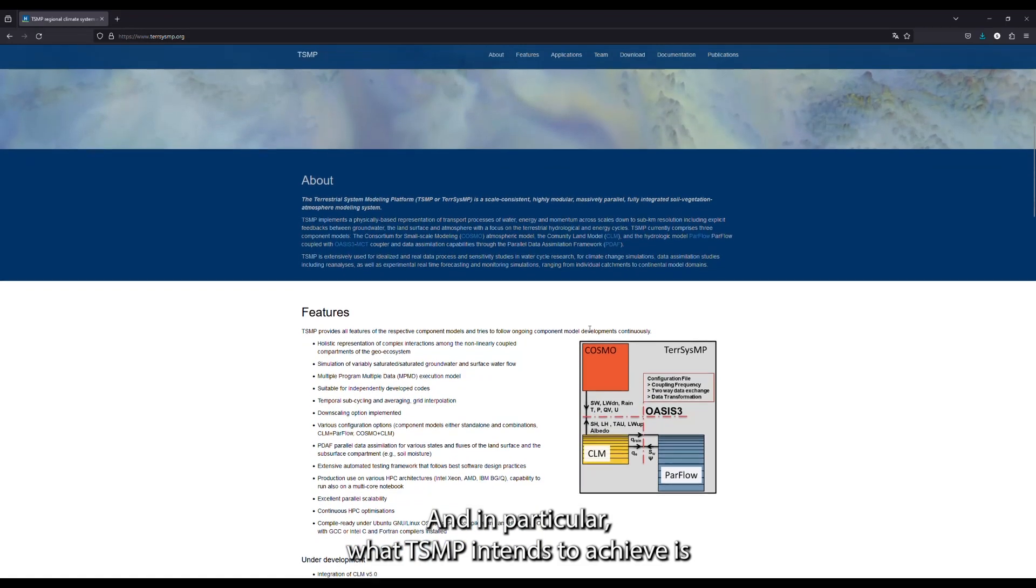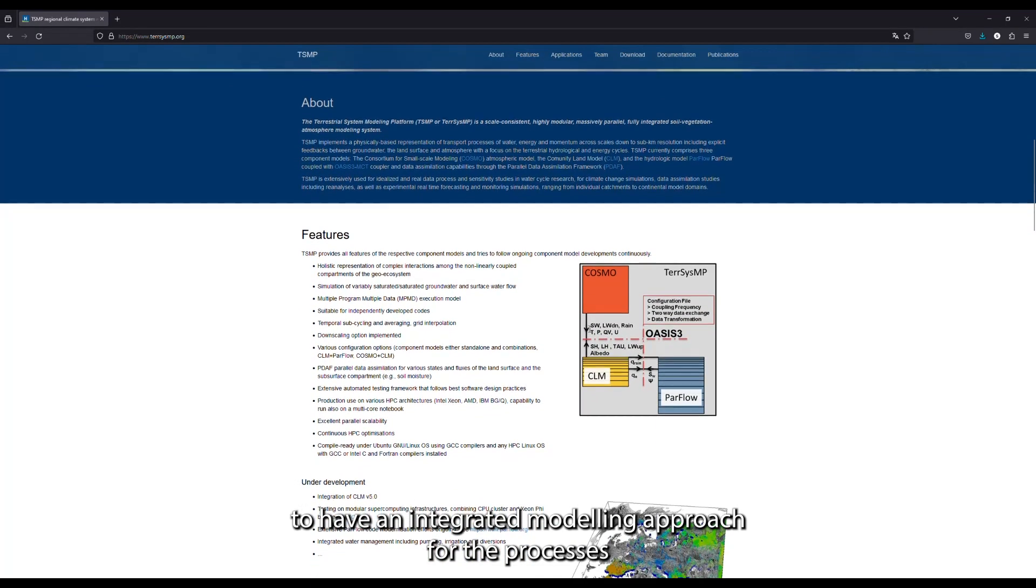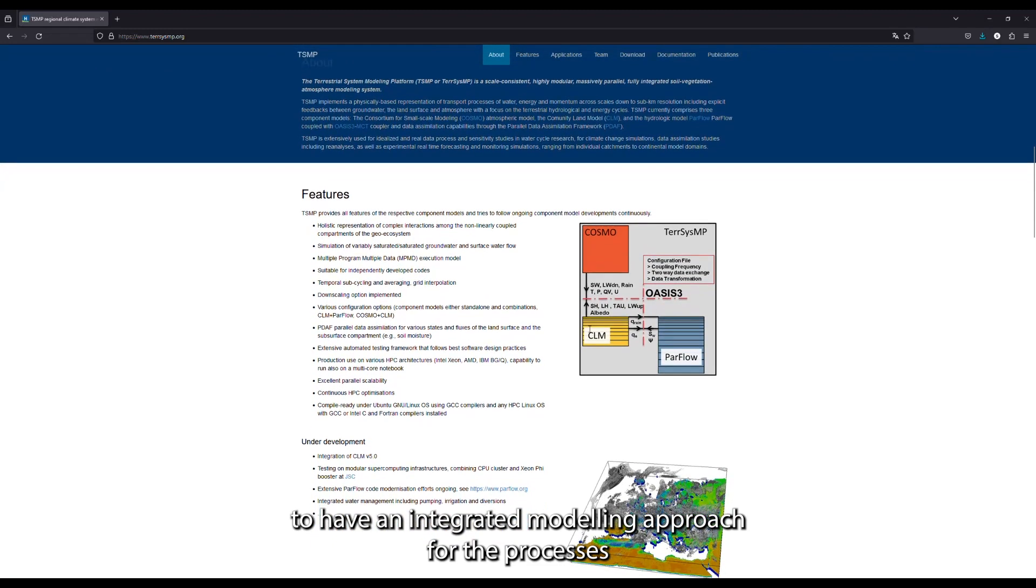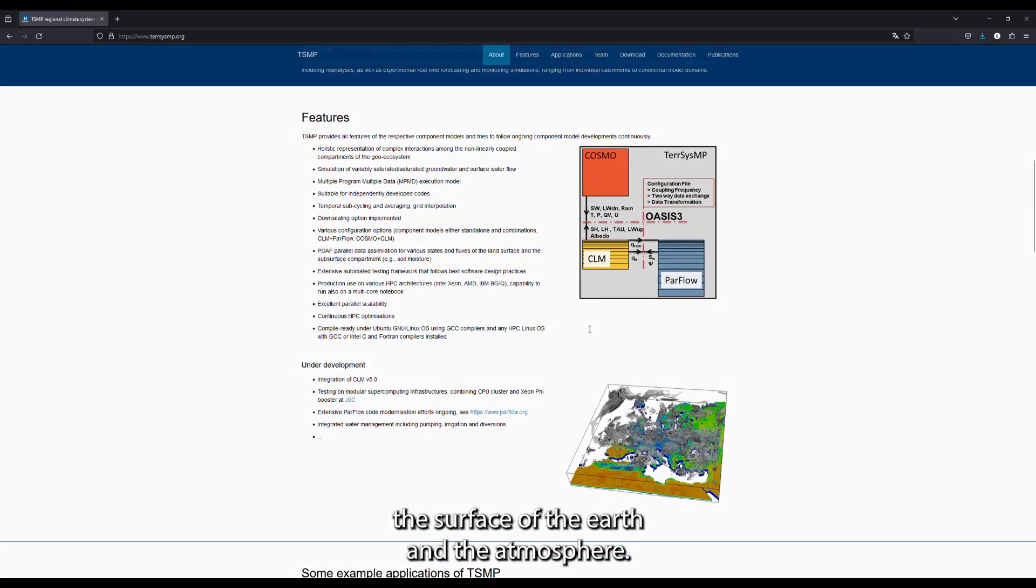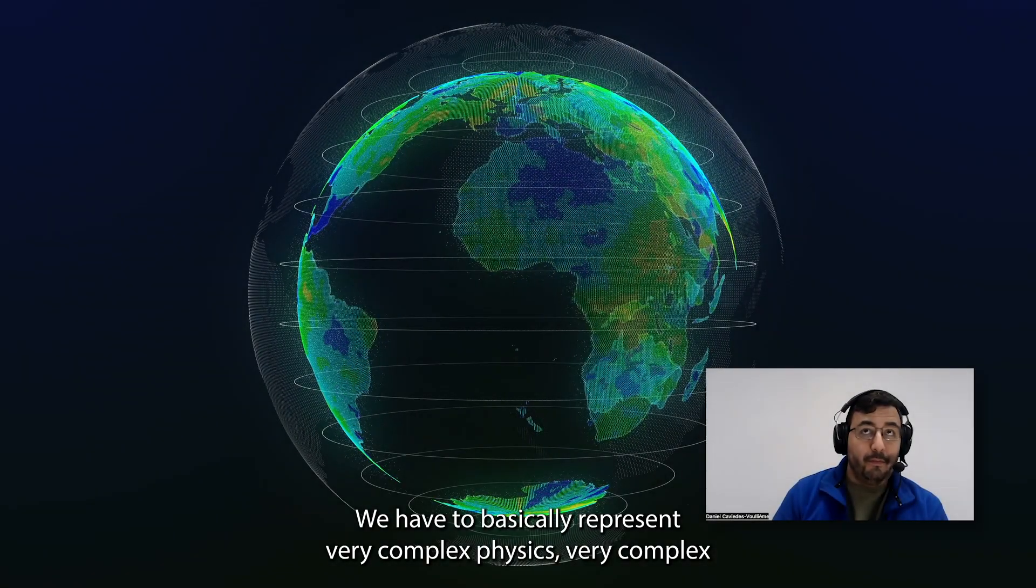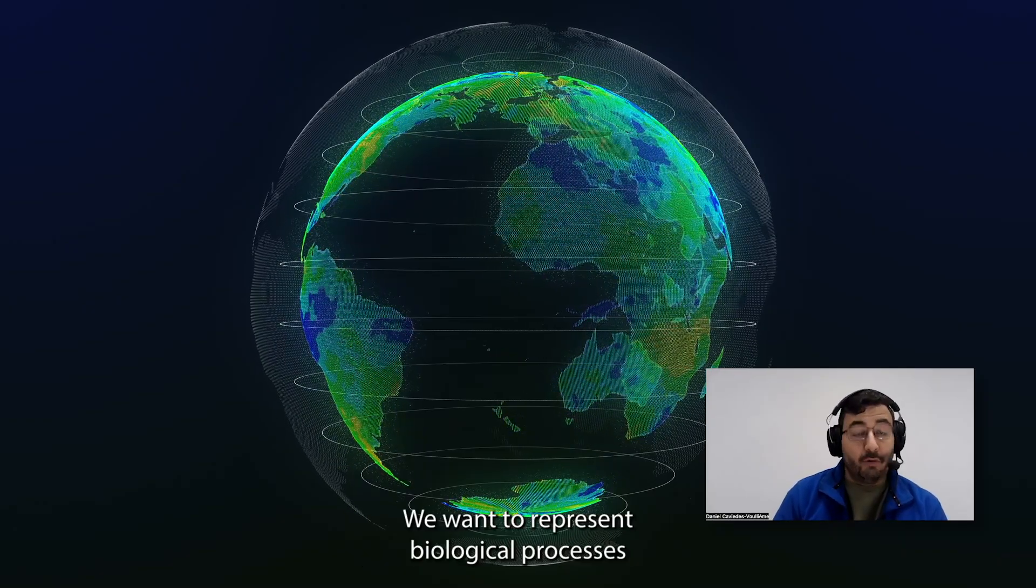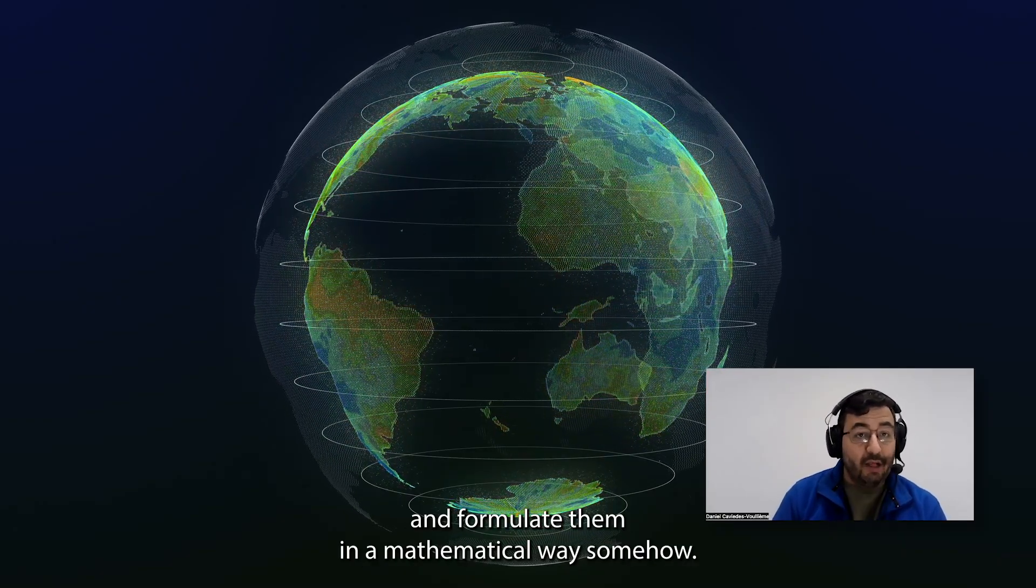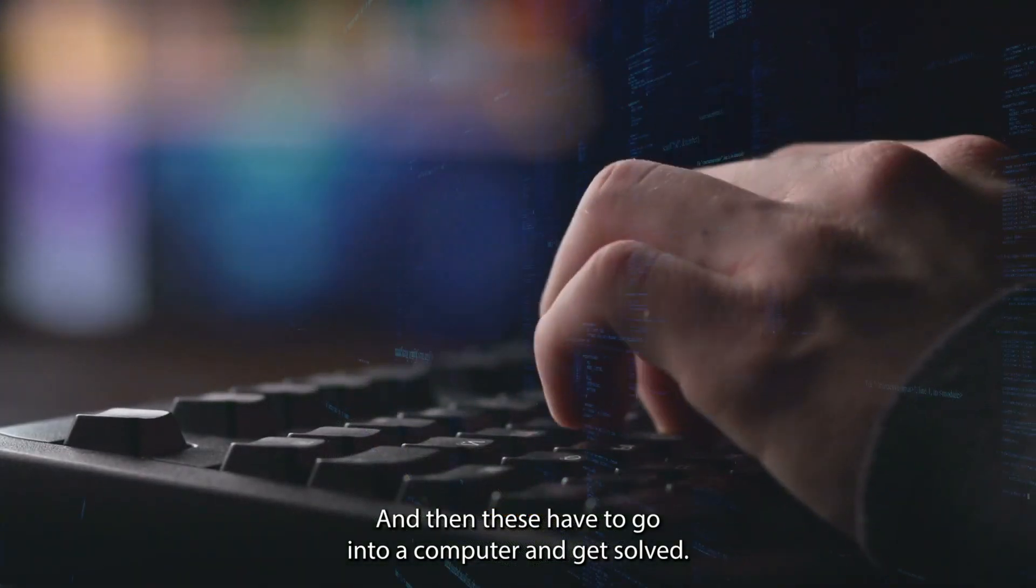In particular what TSMP intends to achieve is to have an integrated modeling approach for the processes spanning the subsurface, the surface of the Earth and the atmosphere. We have to basically represent very complex physics, very complex chemistry. We want to represent biological processes and formulate them in a mathematical way somehow. And then these have to go into a computer and get solved.